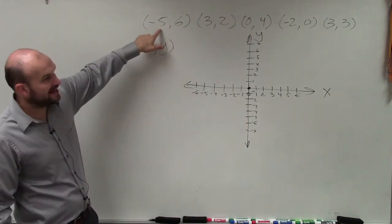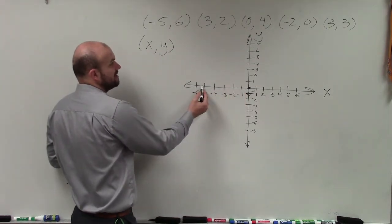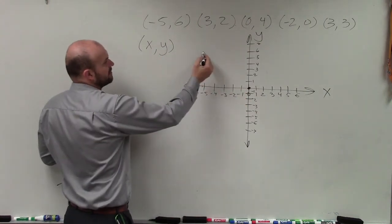So first thing we have here, we have negative 5. So that's going to tell me to go all the way negative 5 on the x-axis, and then go up to 6 on the y-axis. So I go over negative 5, up 6.